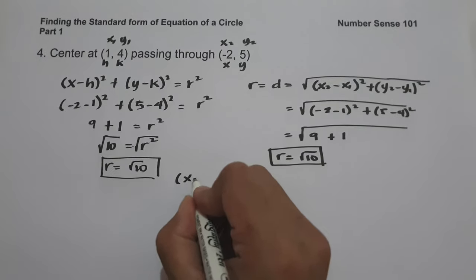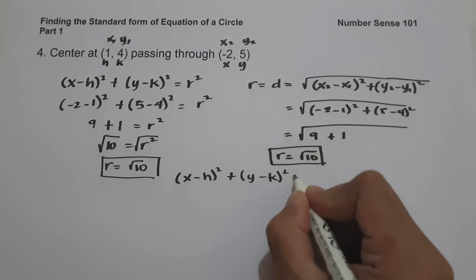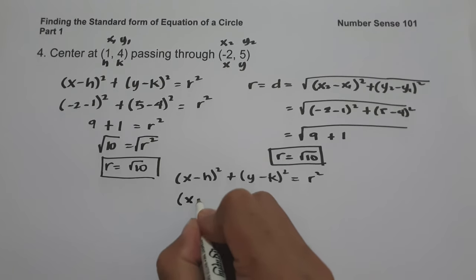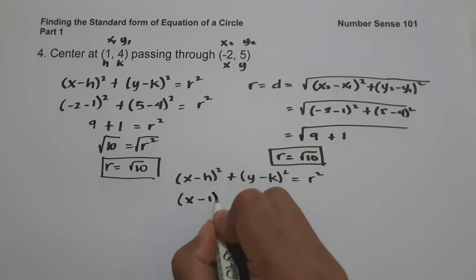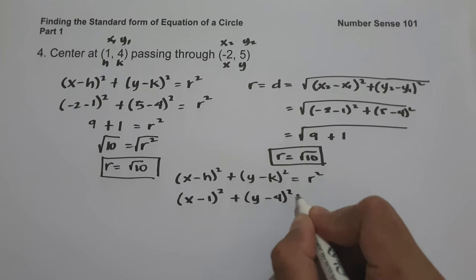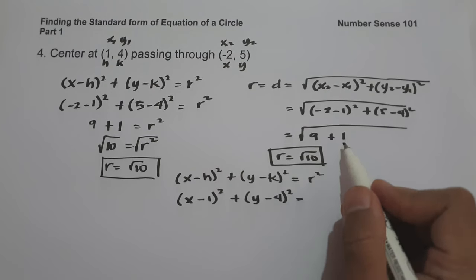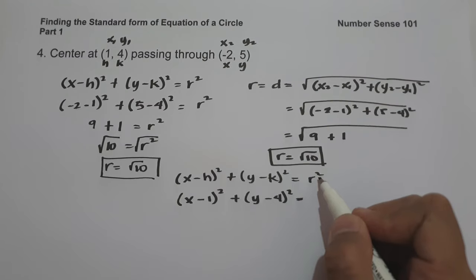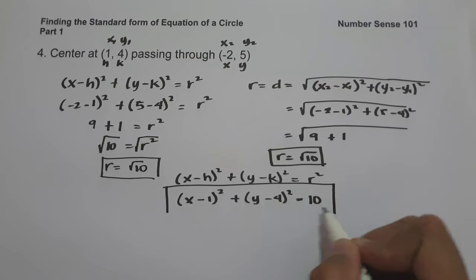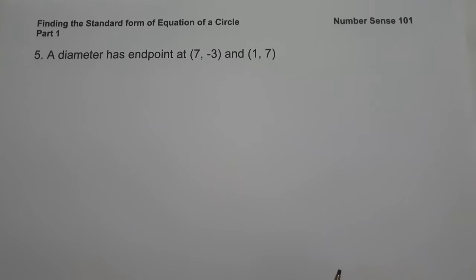To find the standard form, we substitute the center (h = 1, k = 4) and r = square root of 10: (x minus 1) squared plus (y minus 4) squared equals (square root of 10) raised to 2. We can cancel the radical sign and the exponent 2, giving us 10. So the standard form is (x minus 1) squared plus (y minus 4) squared equals 10.